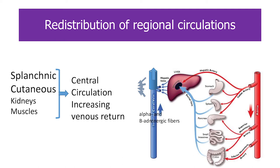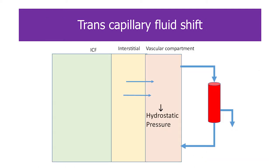Splanchnic circulation is most important. Blood gains in the venous circulation using vasopressin, pushing the blood back to the heart and into more central circulation. In transcapillary shift, when there is loss of volume and decrease in hydrostatic pressure in the capillary, there is a shift of interstitial fluid into the vascular space, increasing plasma volume.